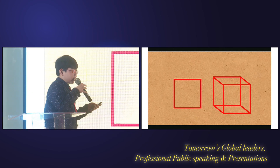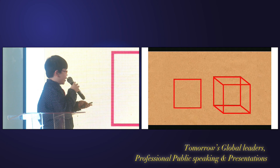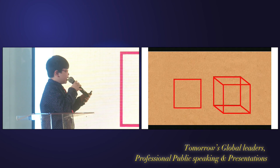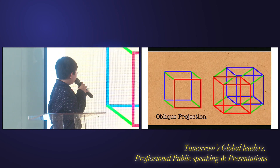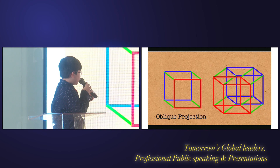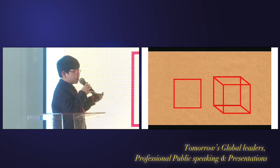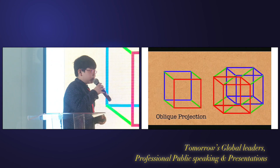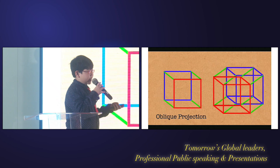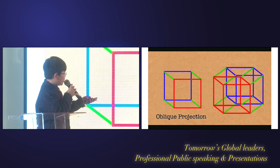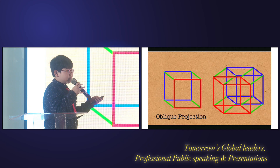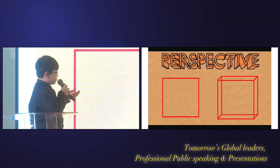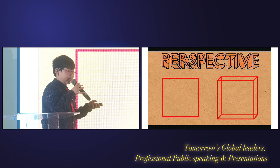First, draw a square, then another square — and this is the result: a cube. So we start from that cube, draw another cube, and connect all the edges together. Eventually, this is the hypercube.